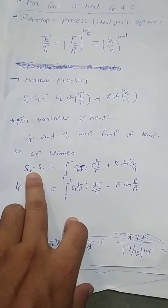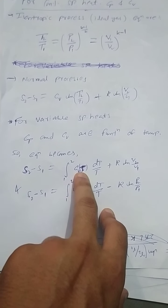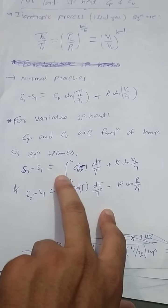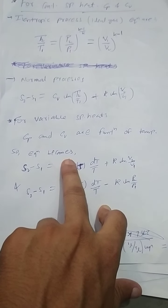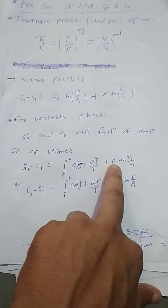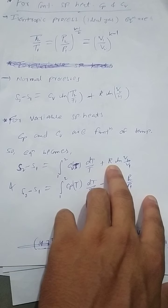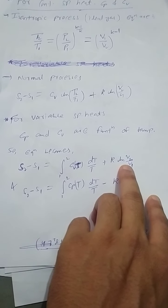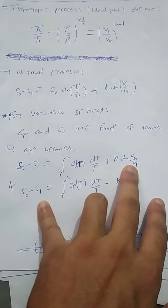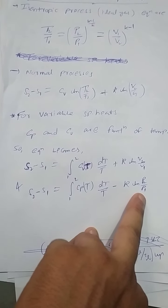Change in entropy: specific heat at constant volume as a function of temperature, integrated from initial to final, dT over T, plus gas constant times logarithmic specific volume ratio from final to initial. Similarly, the other equation is in pressure terms.